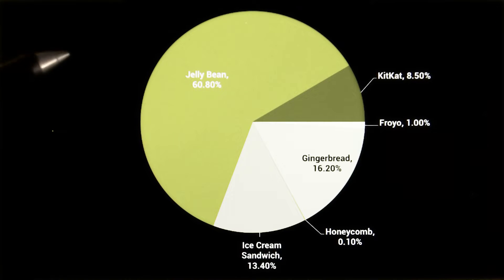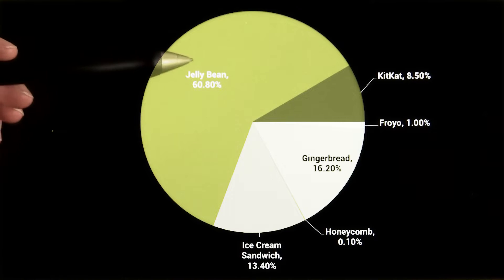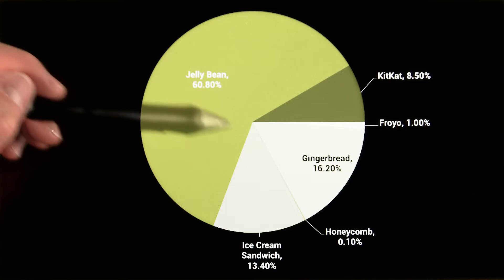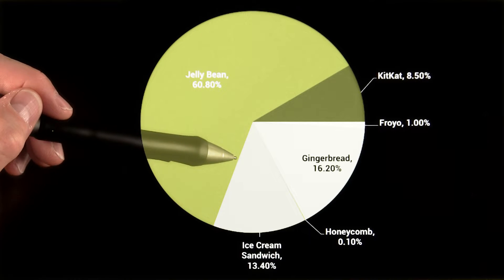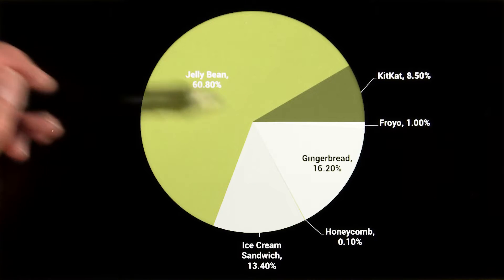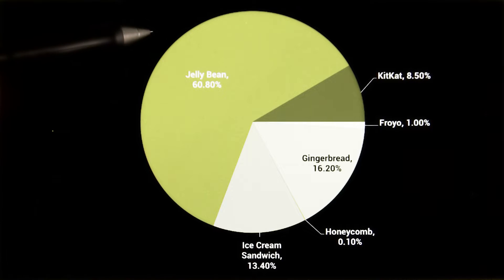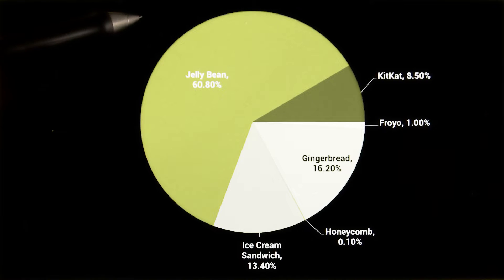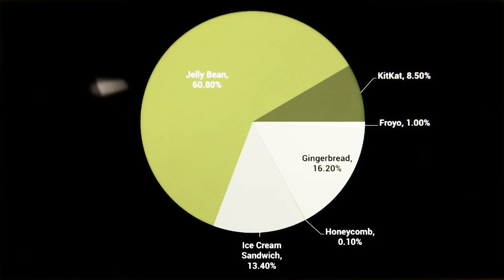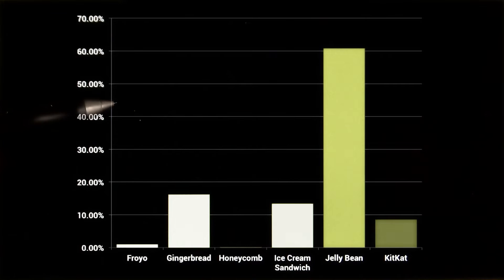On the Android developer site, we show the relative number of active Android devices running a given platform version in this pie chart, because pie charts are awesome. For our purposes though, you're really better off looking at this as a histogram.